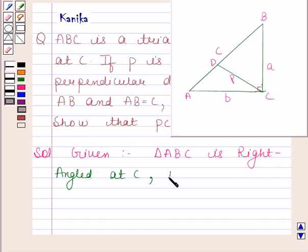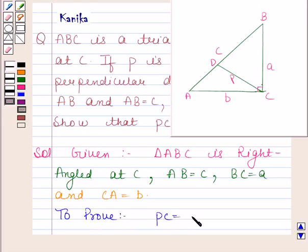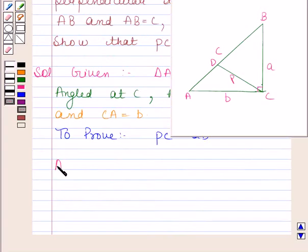AB is equal to C, BC is equal to A, and CA is equal to B. We have to prove that PC is equal to AB. The area of a triangle is given by half into base into altitude.